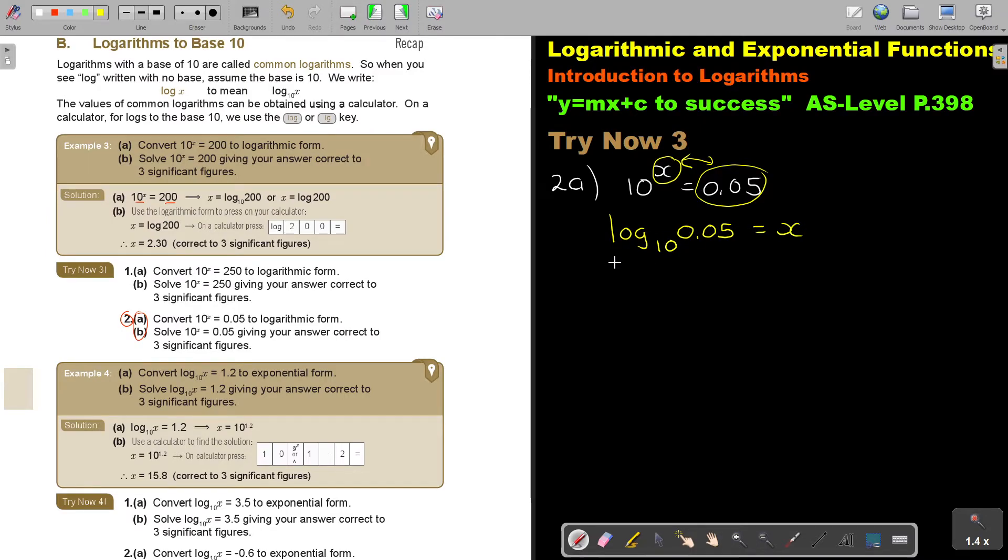Usually, they put the x on this side, but it doesn't really matter. Therefore, x equals log 0.05. You can leave out the 10.